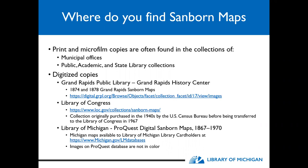You can also find maps through the Library of Congress website. These collections were originally purchased in the 1940s by the U.S. Census Bureau before being transferred to the Library of Congress in 1967. You can also find some databases through companies like ProQuest. The Library of Michigan has a subscription to that database, which is available to Library of Michigan library cardholders. One key difference with those maps versus the ones through the Library of Congress or the Grand Rapids History Center is that they are not in color — a downside, but they at least confirm whether a map exists.